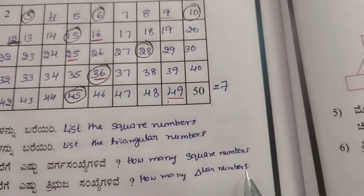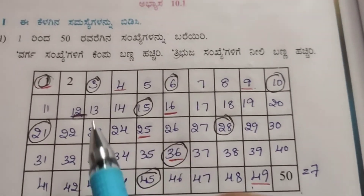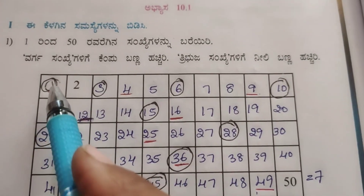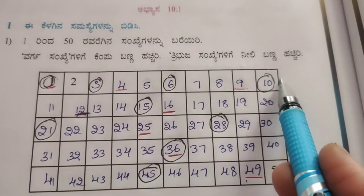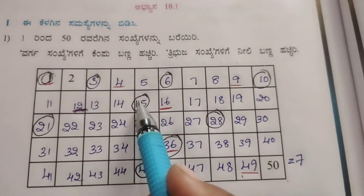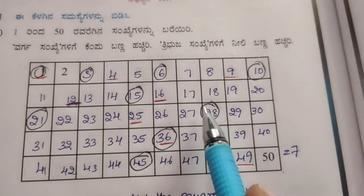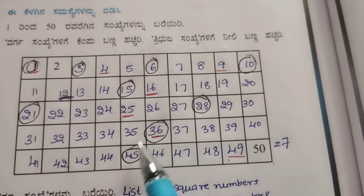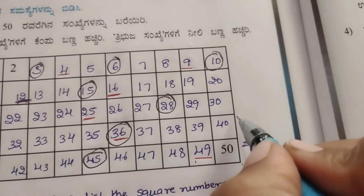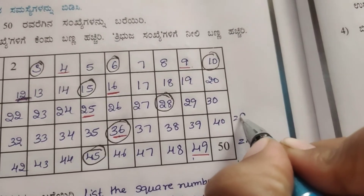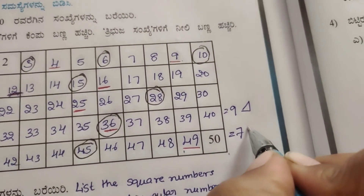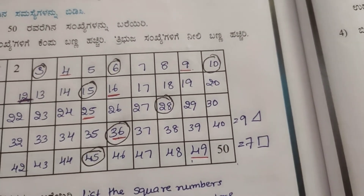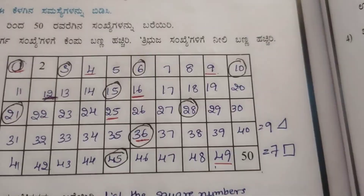How many triangular numbers are there? Counting: 1, 3, 6, 10, 15, 21, 28, 36, 45 — there are 9 triangular numbers. So there are 9 triangular numbers and 7 square numbers.